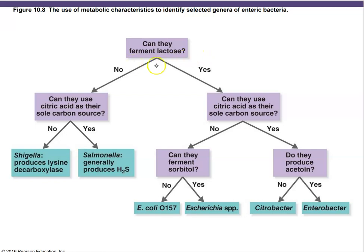If the answer to fermenting lactose is no, you might then ask whether they can use citric acid as a carbon source. That narrows down the options — for example, you might be dealing with a Salmonella-type bacterium if it can use citric acid. If lactose fermentation was yes, you again ask about citric acid. If citric acid was no but they can ferment sorbitol, you might be dealing with E. coli or other Escherichia species. If the citric acid answer was yes, you might be dealing with Citrobacter or Enterobacter.